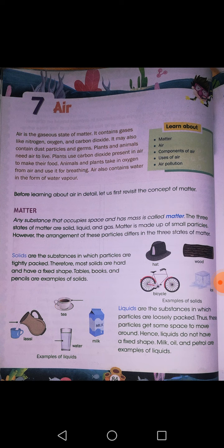Whether it is water, milk, any juice, any coloring, smoke, cooking gas, or steam — everything is basically present in three states. Everything around you is either solid, liquid, or gas. These three are the states of matter. So everything around you is present in one of these three forms — solid, liquid, or gas — and basically this is matter.